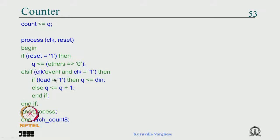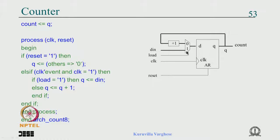When the clock comes, if load is 1 Q gets din; if load is 0 then Q gets incremented. Load has priority over incrementing. The synthesis tool sees the inner if-else as a 2-to-1 MUX with select line load: when load is 1, din connects to D; when load is 0, Q fed back through an incrementer connects to D. Upon the clock, the selected value goes to Q — giving you a presetable counter synthesized from flip-flops, muxes, and an incrementer.